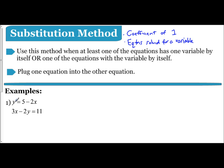The first example: we see the equation y equals 5 minus 2x, and 3x minus 2y equals 11. The substitution method says to plug one equation into the other. The whole purpose is to have an equation already solved for a variable. In this first example, y is already equal to 5 minus 2x — this equation is already solved for y.